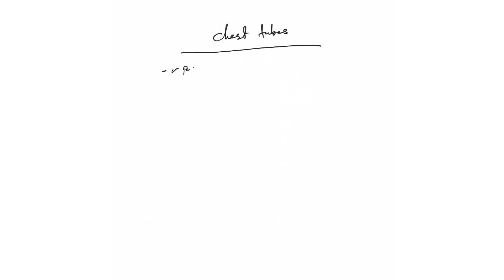First, check position on chest x-ray if one was done that day. I recommend daily chest x-rays for those with chest tubes — that way you look for position every day and check whether there is pneumothorax or fluid. Make sure it's in good position on the chest x-ray, and I'll show you a few examples in a little bit.